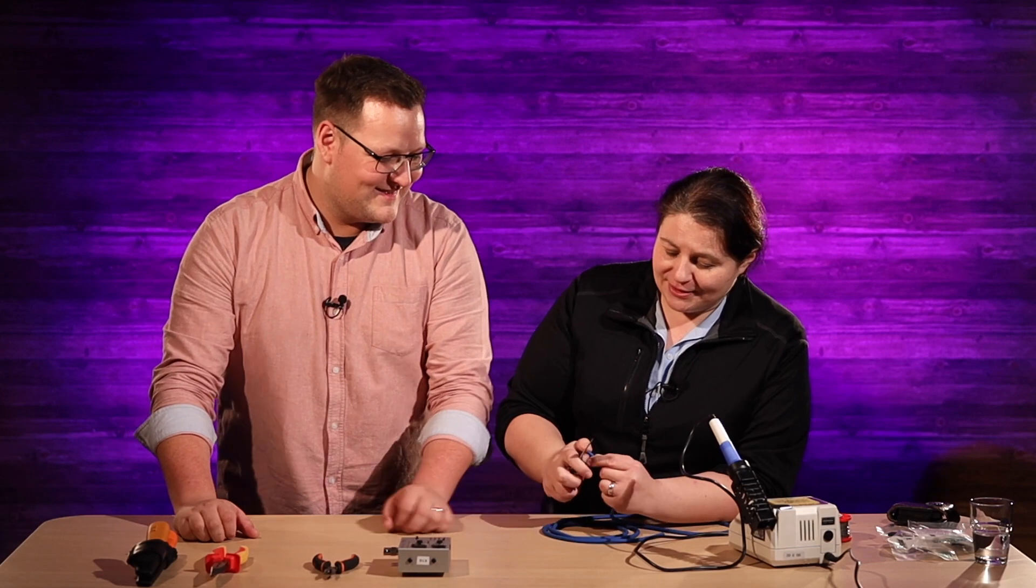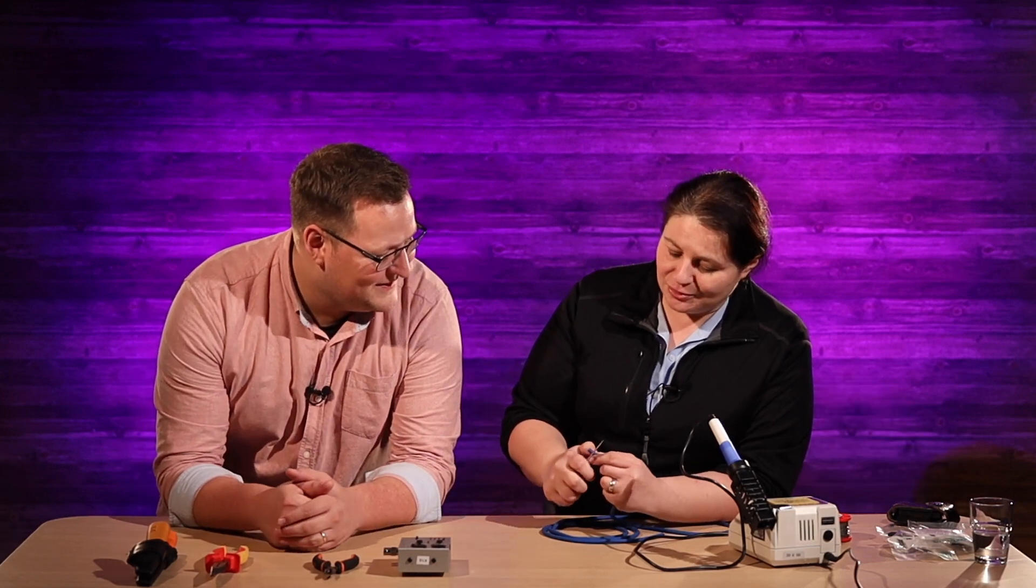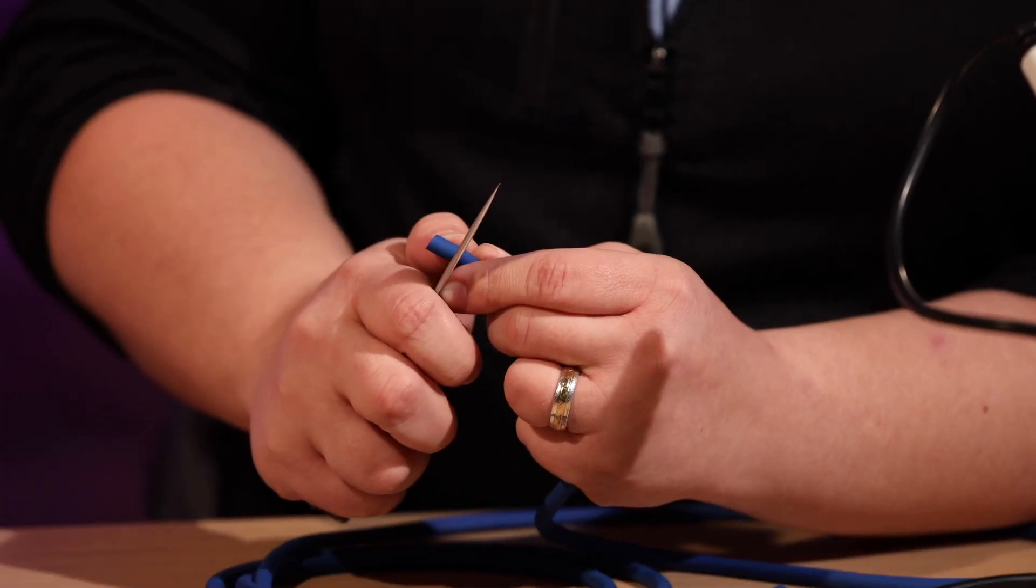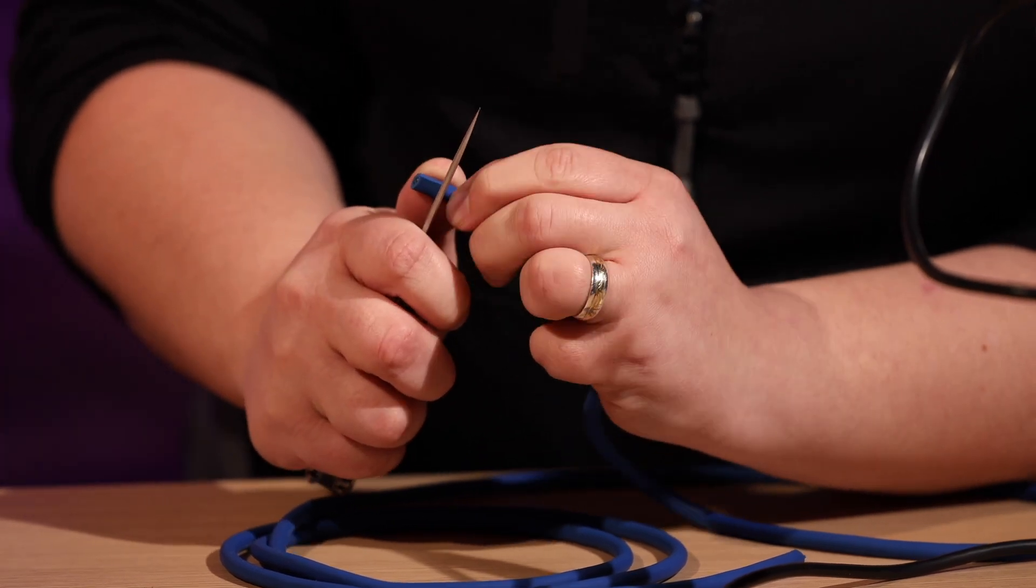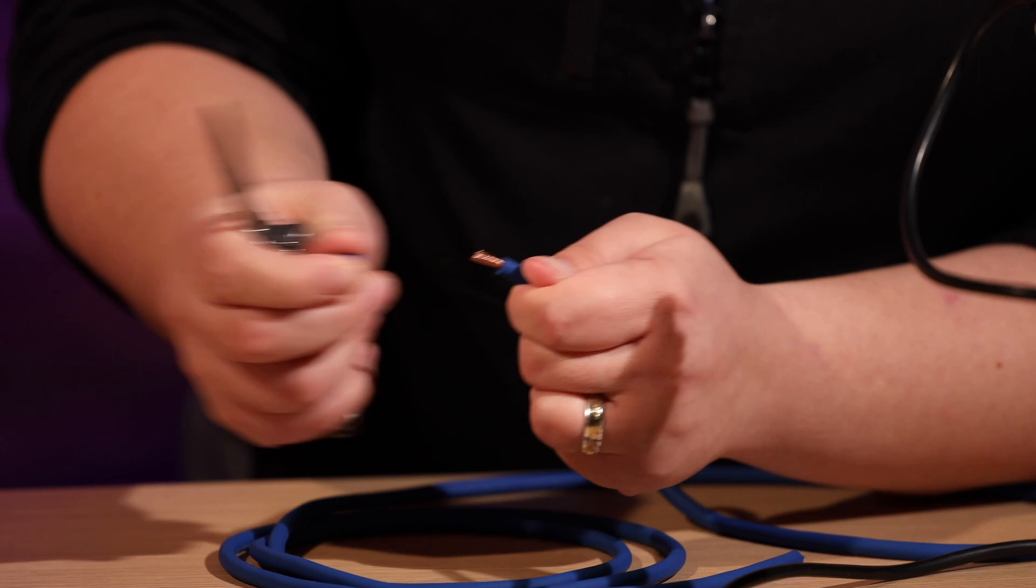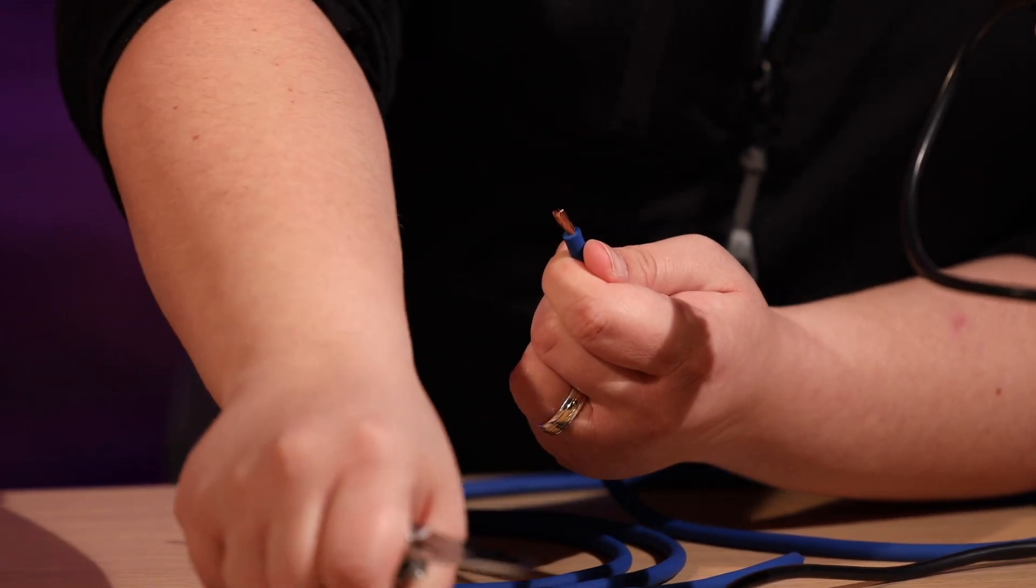So you go out buy a Leatherman but don't use it for this. Buy the cabling tool so you don't cut your thumb open. I am not responsible if you cut your thumb open doing this but just apply a little bit of pressure and the outer protection comes right off.